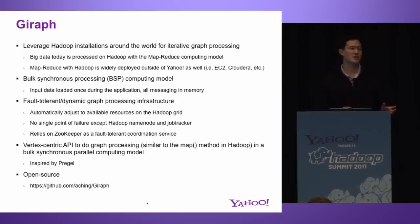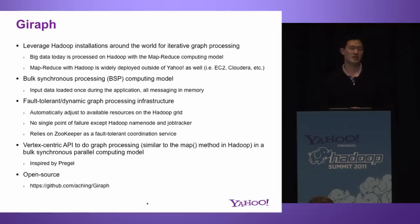The Bulk Synchronous Parallel model allows us to adjust to things that happen on the grid. For instance, if workers go down, or in the case that you have more workers available, we can take advantage of that as we proceed through our application. We use Zookeeper as a fault-tolerant coordination service. If you have a running Zookeeper on your cluster, you can utilize that one; if not, we'll spawn one up dynamically for you when you start your job.